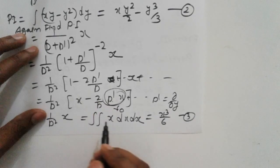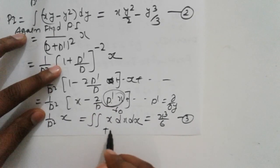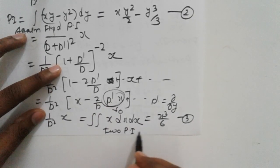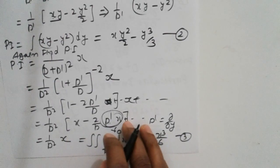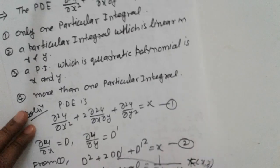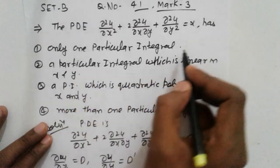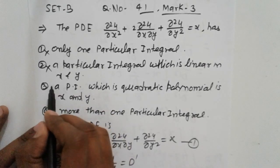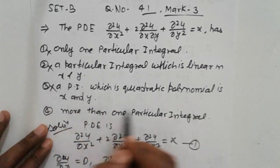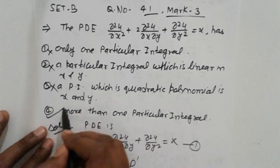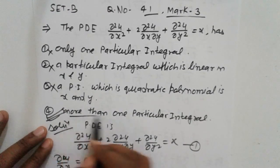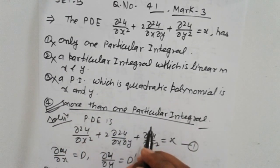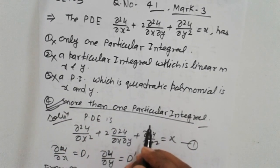So we have found two particular integrals. Therefore, the first option (only one, linear) is wrong, the second is also wrong, and the third (quadratic) is not correct either. The correct answer is the option stating more than one particular integral exists. Thank you.